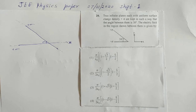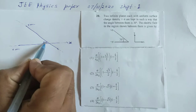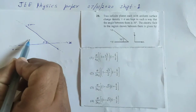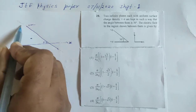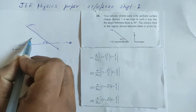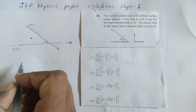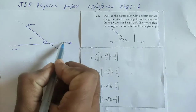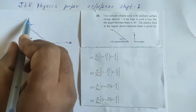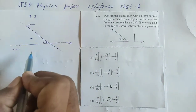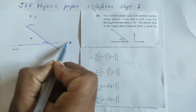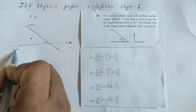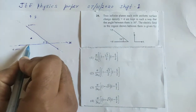We have to find out the electric field in the region shown between them. The planes are infinite with surface charge density plus sigma, and we need to find the electric field in the region between them.